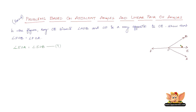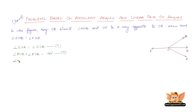Now since ray OE stands on line FE, using the linear pair concept, we have angle FOB plus angle EOB equals 180 degrees — equation two. Since AO is also standing on the line FE, we also have angle FOA plus angle EOA equals 180 degrees — equation three.